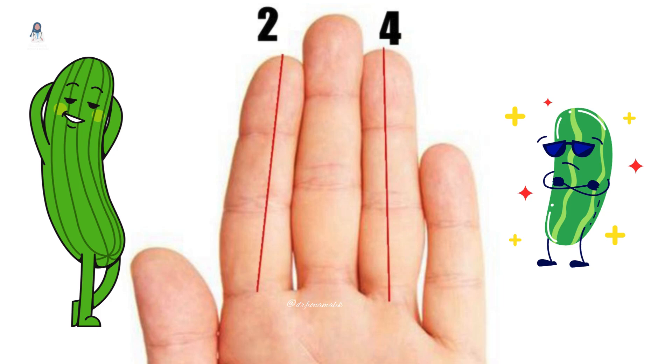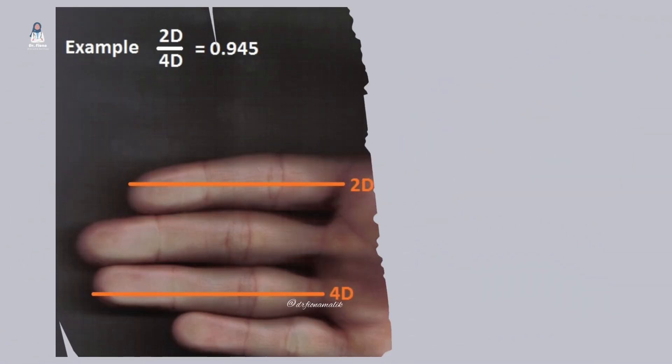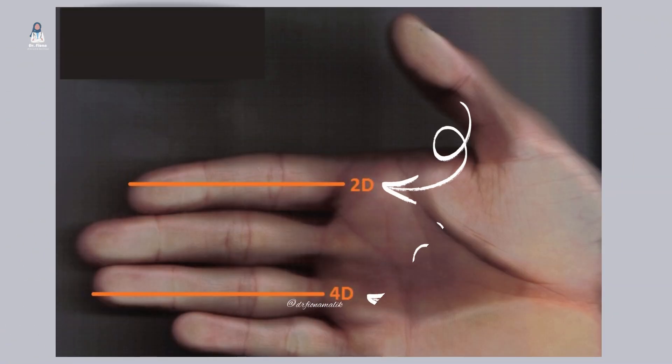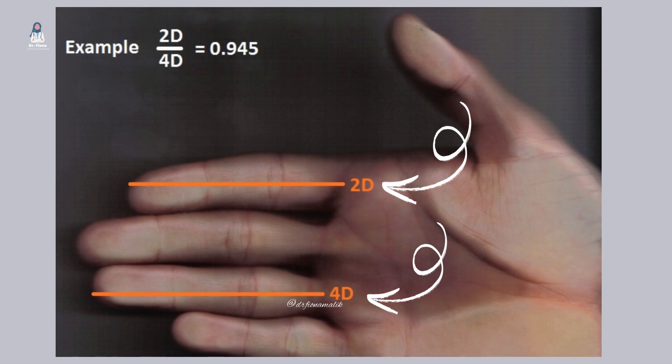To find your 2D to 4D ratio, measure the length of your index finger and your ring finger, from the base to the tip. Then, divide the length of your index finger by the length of your ring finger.